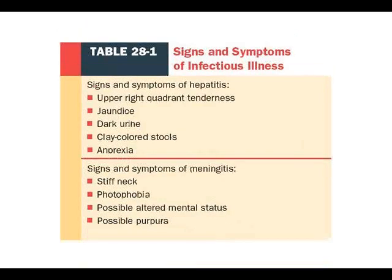Signs and symptoms of hepatitis — an infectious disease of the liver — include right upper quadrant pain or tenderness, jaundice (remember that includes the sclera of the eyes), dark urine, clay-colored stools, and anorexia. Signs or symptoms of meningitis include stiff neck, photophobia (light causes eye pain), altered mental status, and purpura — larger, splotchy purplish blotches in the skin.